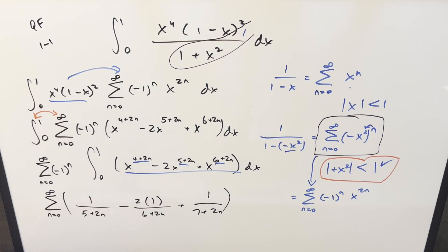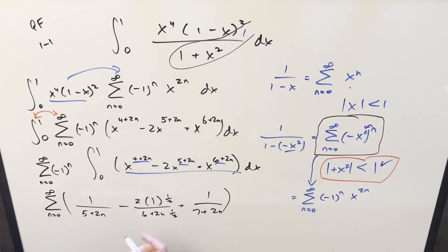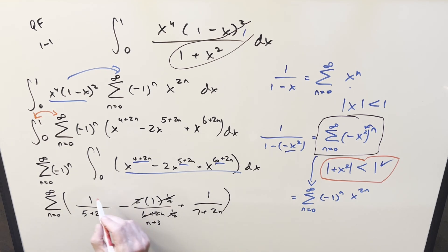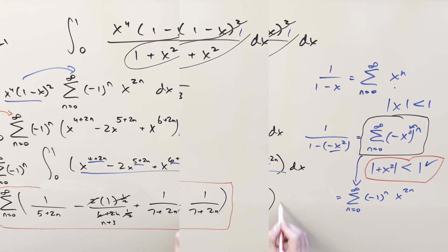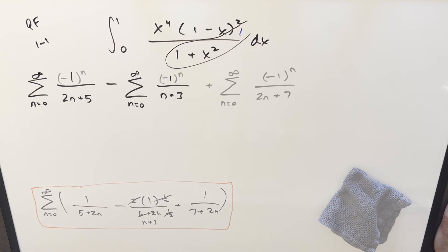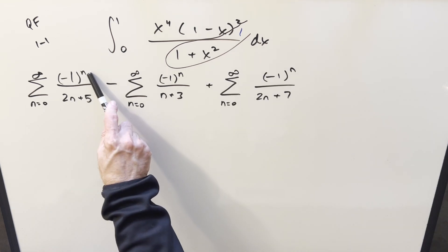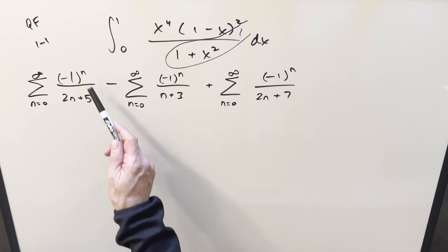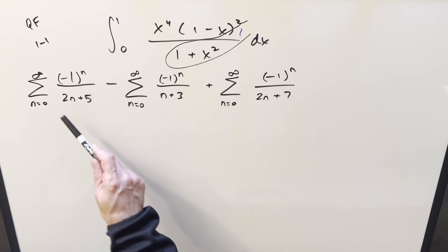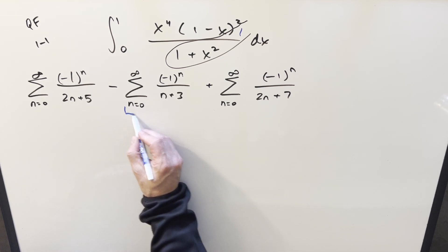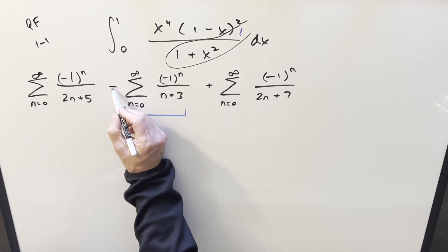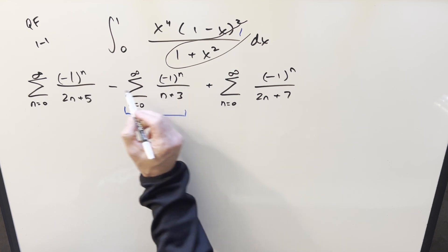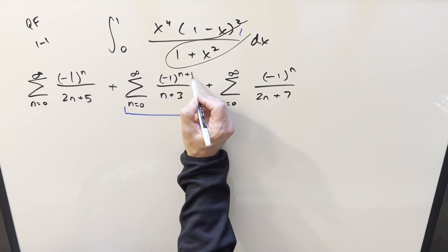Now all we need to do is deal with the sum. For the middle term, multiplying through by one-half over one-half cancels the two, making the denominator (n+3). I forgot to include (minus one) to the n, so I'll break this into three sums and distribute (minus one) to the n into each. Now let's focus on the middle sum and multiply that minus sign in to get (minus one) to the (n+1).